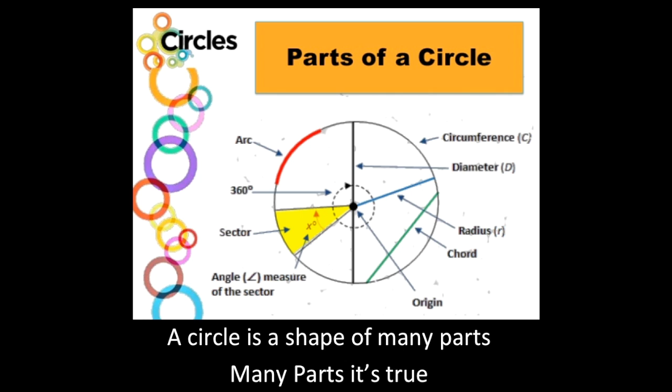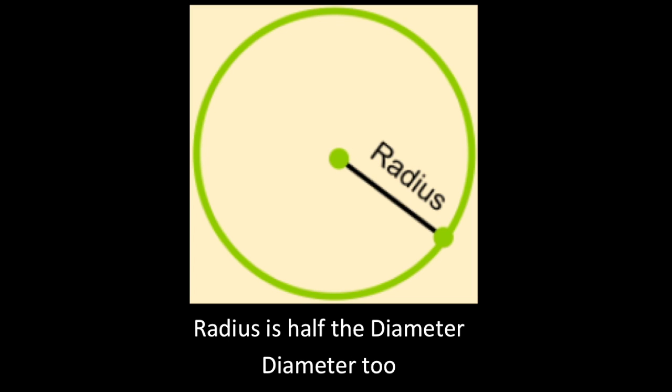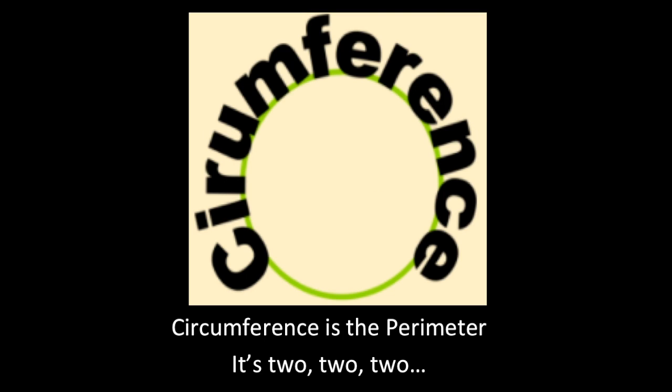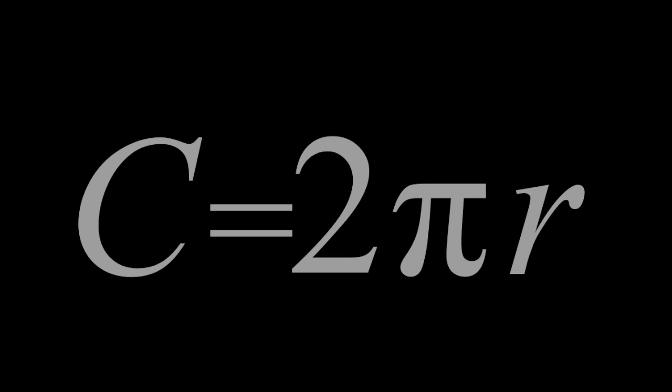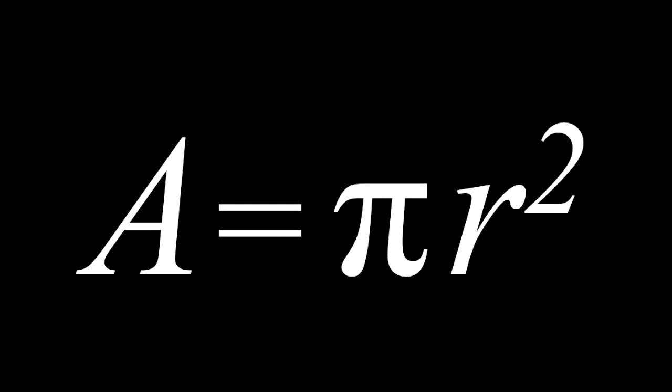A circle is a shape with many parts, it's true. Diameter is the distance across it. Radius is half the diameter. Circumference is the perimeter — two times pi times r is circumference. And pi times r squared is the area of a circle.